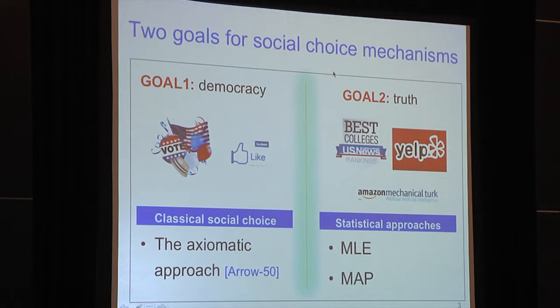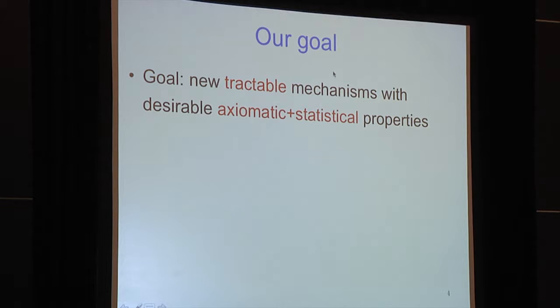The second paradigm, more familiar to the NIPS community, assumes there is an objectively correct ground truth, and agents' preferences are noisy perceptions of this ground truth through some statistical model. You then follow standard statistical approaches, using estimators like MLE or MAP to make a decision. Our goal is more ambitious: we want computationally tractable mechanisms that achieve both great axiomatic properties from classic social choice and great statistical properties simultaneously.